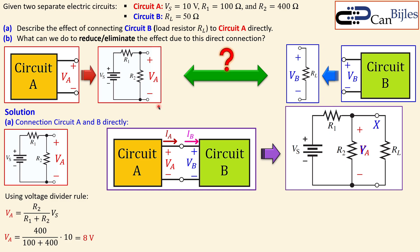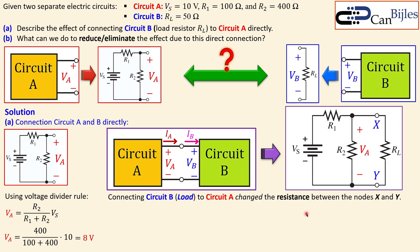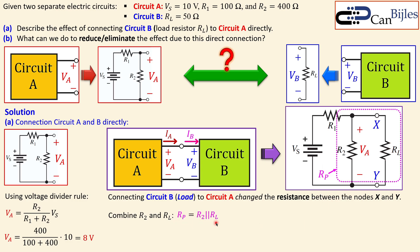By connecting B to A we actually change the load. The resistance between nodes X and Y is no longer R2 only — R2 is now in parallel with RL, giving a new resistor RP. That parallel combination is given by the formula for parallel resistors. With R2 = 400Ω and RL = 50Ω, we get RP = 400/9 ohms, approximately 44.44 ohms.